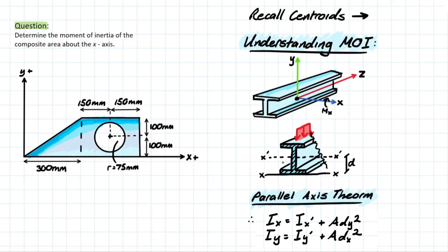In class, we'll also be talking about another term called the polar moment of inertia, which is represented by J. The polar moment of inertia represents resistance to torsion or twisting. Our x- and y-axes are parallel to the cross-section, while the z-axis is perpendicular to the face of that cross-section. If we apply a moment about that axis, we're actually going to twist the beam, creating torsion. The higher the value of your moment of inertia, the better it is at resisting either torsion or bending.